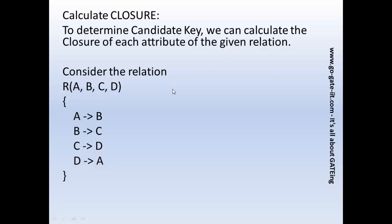Let us take the example given here. We have a relation R with attributes A, B, C, and D, and the following functional dependencies: A derives B, B derives C, C derives D, and B derives A. This is the functional dependency set for the given relation R.